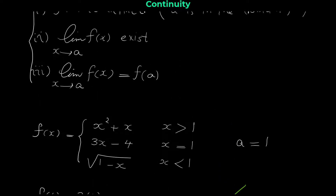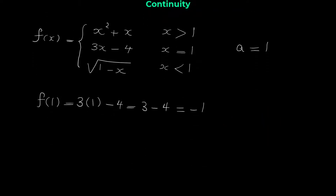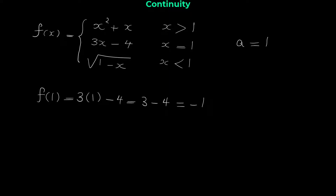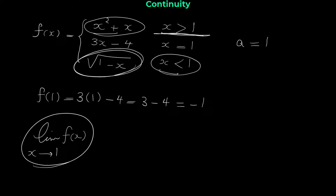The second condition is that the limit of the function when x approaches 1 should exist. But we must pay attention to the equations of f of x — when x is greater than 1 we have one equation, and when x is less than 1 we have a completely different equation. So we have to separate this limit into the right limit and the left limit.